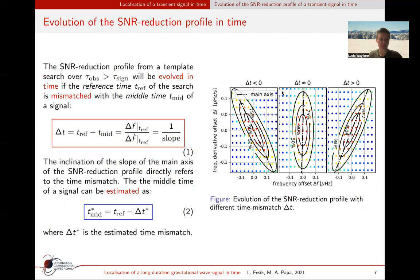One can estimate the middle time of a transient signal by analyzing the SNR reduction profile, which is a two-dimensional profile in frequency and frequency derivative around the actual parameters. The SNR reduction profile will change its inclination if there's a time mismatch between the reference time of a search and the middle time of a signal. We find the slope of the ellipsoid's main axis, from which we calculate the time mismatch to estimate the actual middle time of a transient signal.